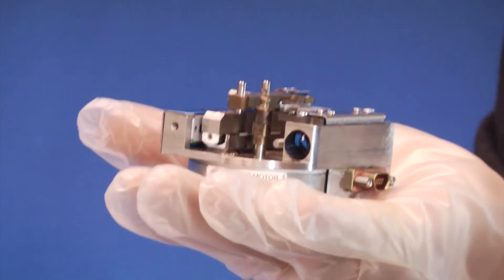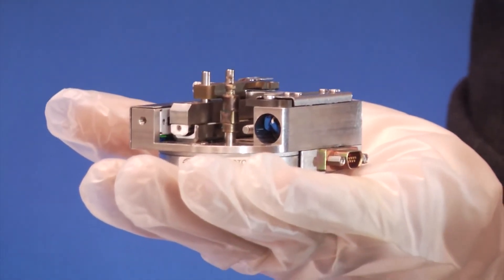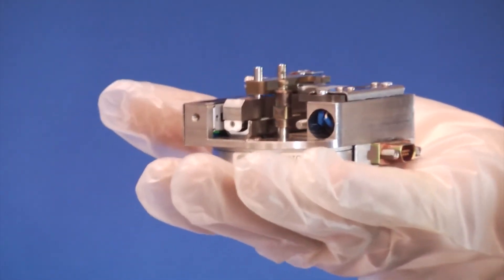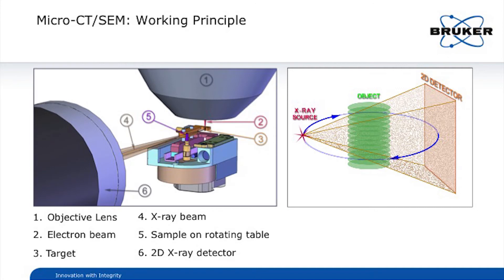Now I'm showing you the stage that you need for the microCT. This stage you can just put on your stage in the SEM and it has a rotating stub for the sample.